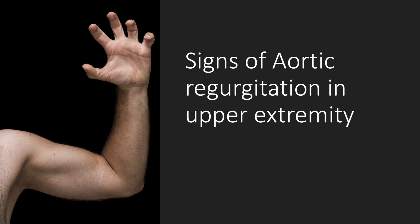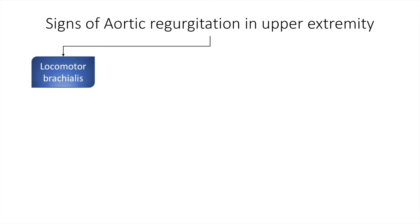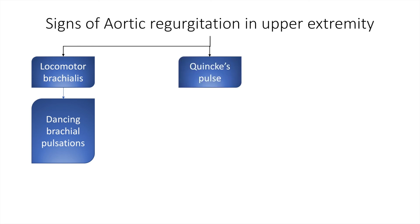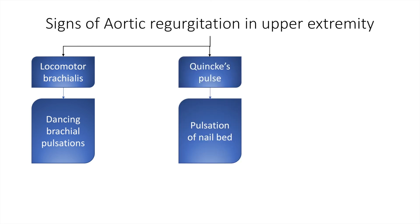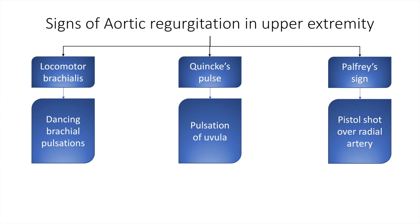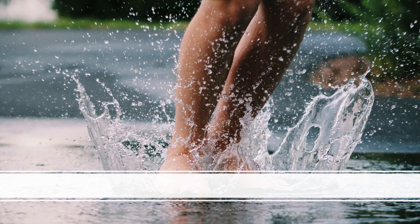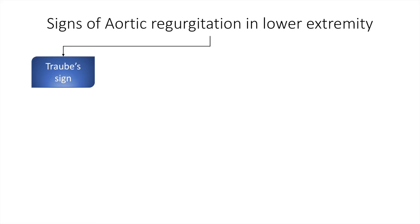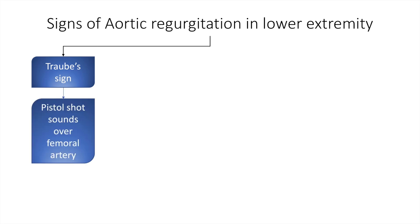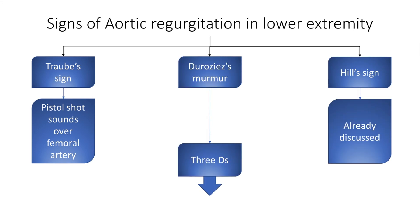The signs of aortic regurgitation in the upper extremity include locomotor brachialis, which is dancing brachial pulsations; Quincke's pulse, which is pulsation of the nail bed; and Palfrey's sign, which is a pistol shot heard over the radial artery with a stethoscope. The signs of aortic regurgitation in the lower extremity include the Traube sign, which is pistol shots over the femoral artery, as opposed to Palfrey's sign over the radial artery. There is also Duroziez's murmur, which is characterized by the three Ds.